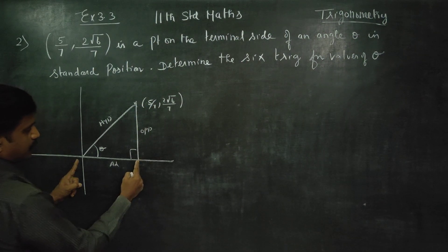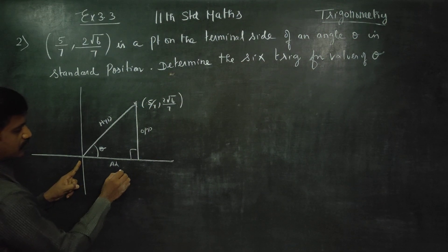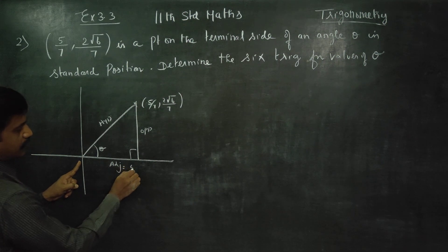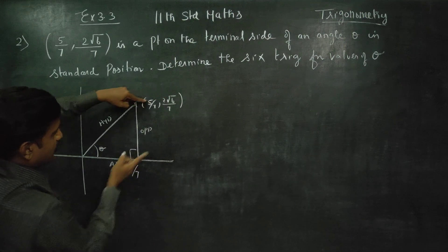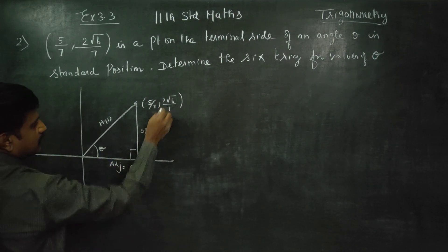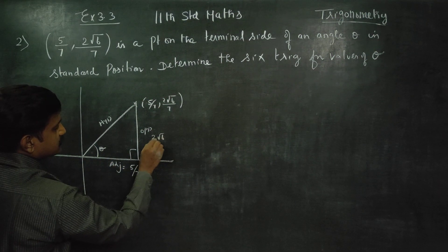5 by 7 is the x coordinate, so the adjacent side is 5 by 7. This is the opposite side. Opposite side is the y coordinate, parallel to the y axis. That's why this is 2 root 6 by 7.